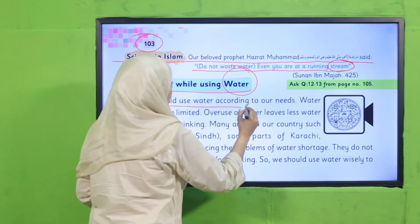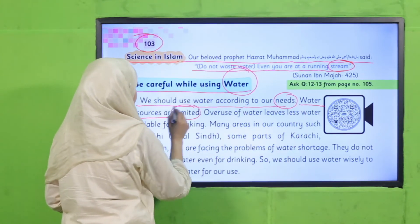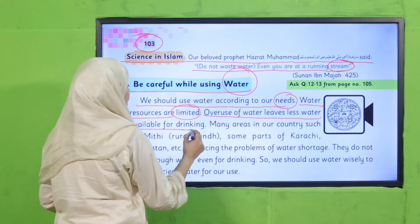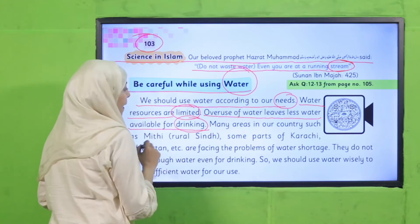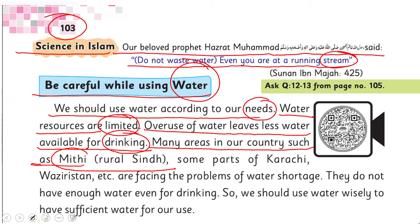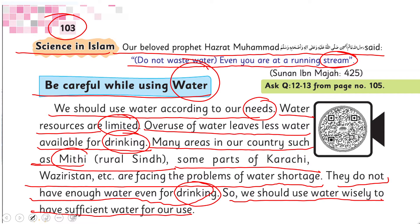We should use water according to our needs. Water resources are limited; overuse of water leaves less water available for drinking. Many areas in our country — such as Mithi, rural Sindh, some parts of Karachi, Waziristan, etc. — are facing the problem of water shortage. They do not have enough water even for drinking, so we should use water wisely to have sufficient water for our use.